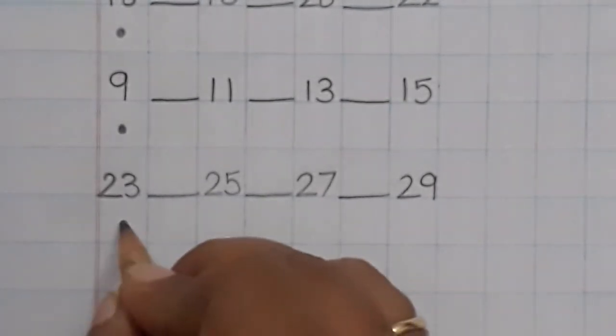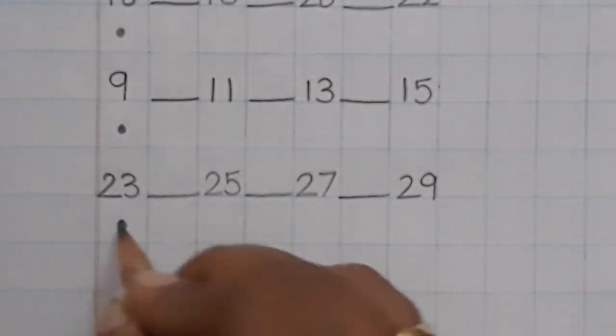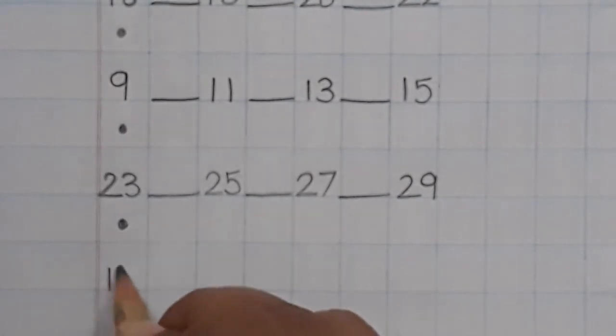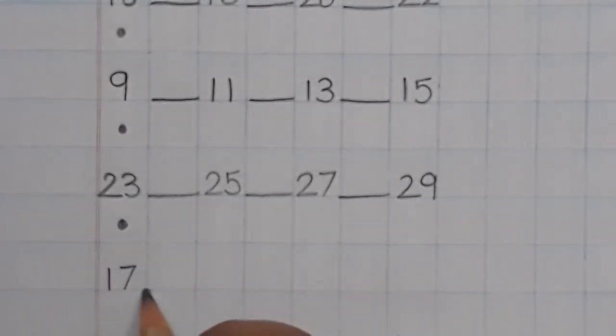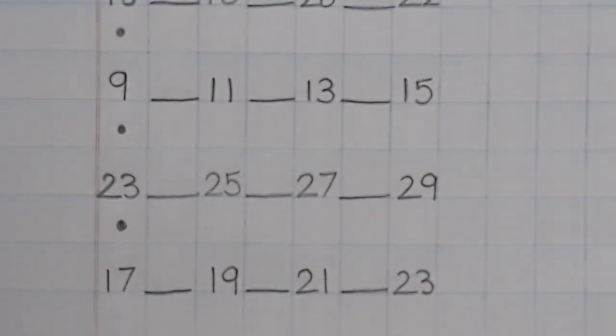One more time, put another dot and write number 17: 17 dash 19 dash 21 dash 23.